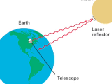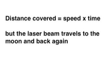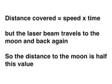The total distance traveled by the laser is then calculated by multiplying the time that it takes from sending the laser to receiving the reflection by the speed of light. Since the laser light travels both to the Moon and back, the distance to the Moon is half of this calculated distance.